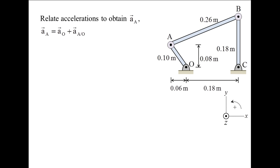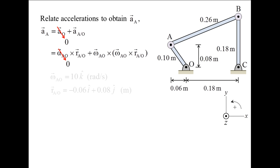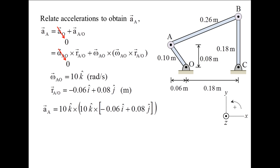The acceleration of point A is obtained by relating the acceleration of points A and O. The acceleration of point A is equal to the acceleration of point O plus the acceleration of point A relative to point O. The acceleration of point O is zero since it is fixed. The relative acceleration term is decomposed into tangential and normal components. The tangential component is alpha AO cross RAO, and the normal component is omega AO cross the quantity omega AO cross RAO. Alpha AO is zero because link AO rotates with constant angular velocity. Evaluating the cross product gives us the acceleration of point A.